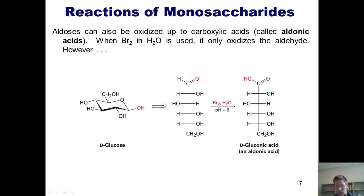Another reaction we'll learn is this one. Aldoses can also be oxidized up to carboxylic acids, which are called aldonic acids. Thus, if I take this compound D-glucose, which is an aldose because it has an aldehyde on the end, and I treat it with bromine and water, bromine can act as an oxidant and oxidize this aldehyde up to a carboxylic acid.